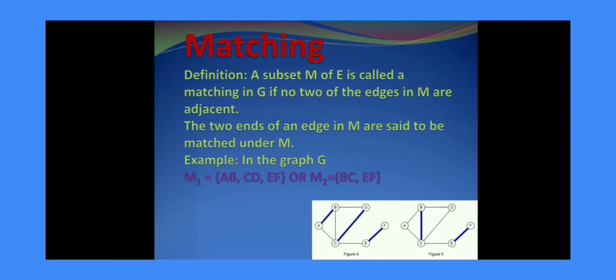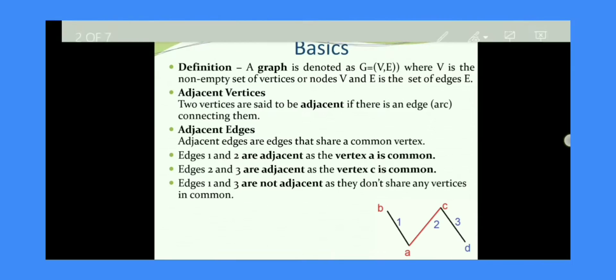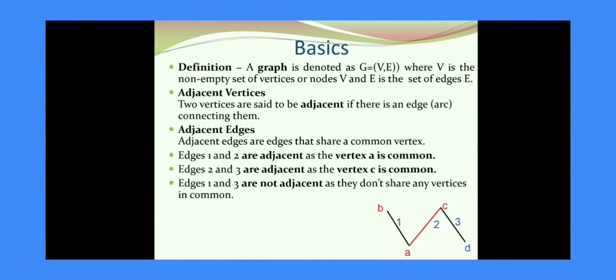Welcome to the session on matching in graph theory. Let us recollect some basics. A graph is denoted as G equals the ordered pair (V, E), where V is the non-empty set of vertices and E is the set of edges.